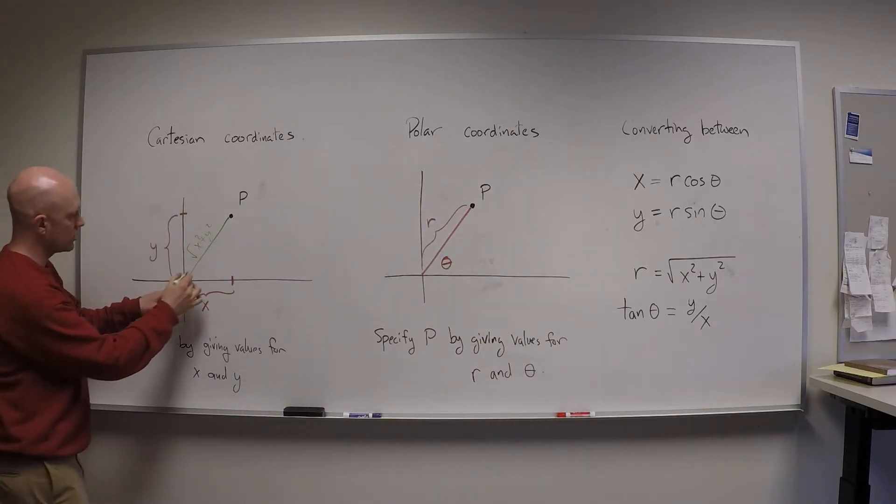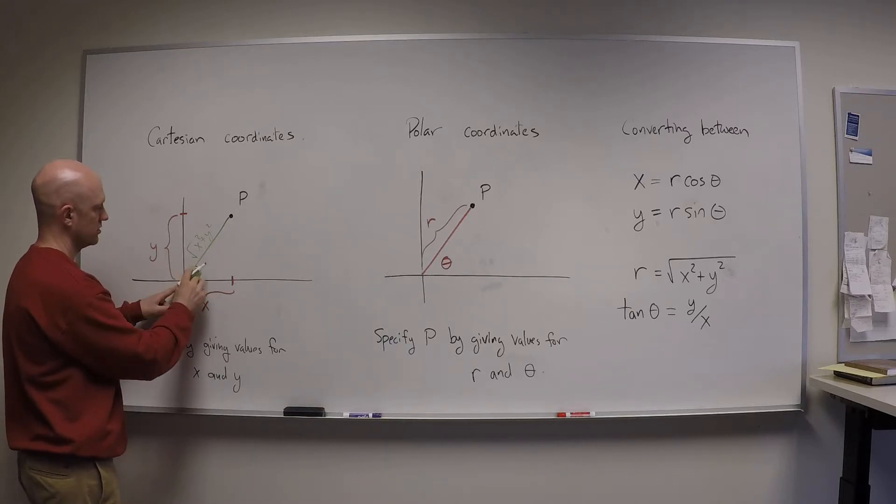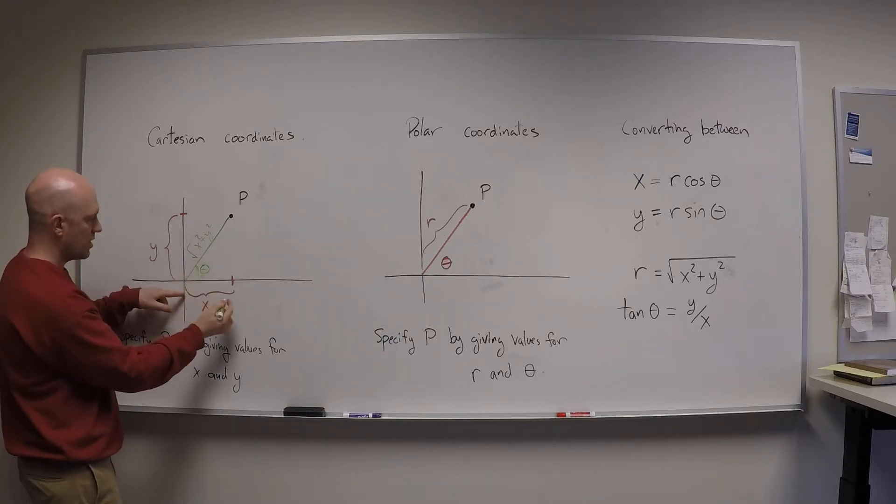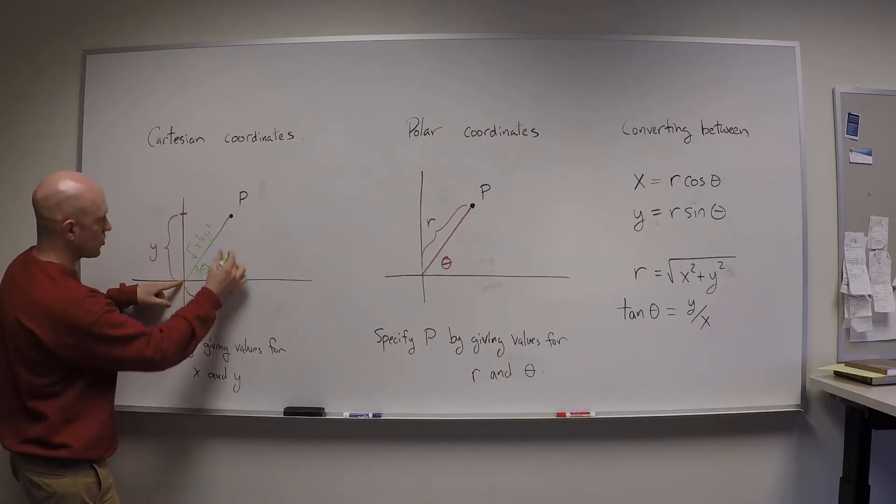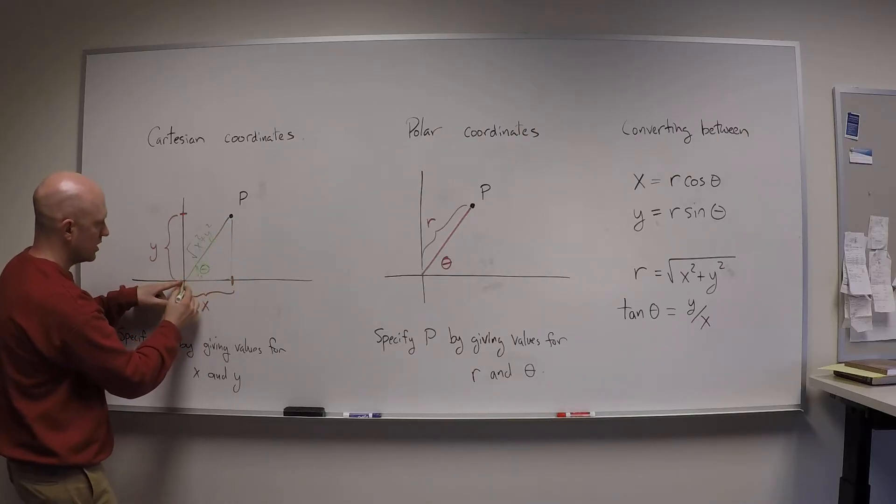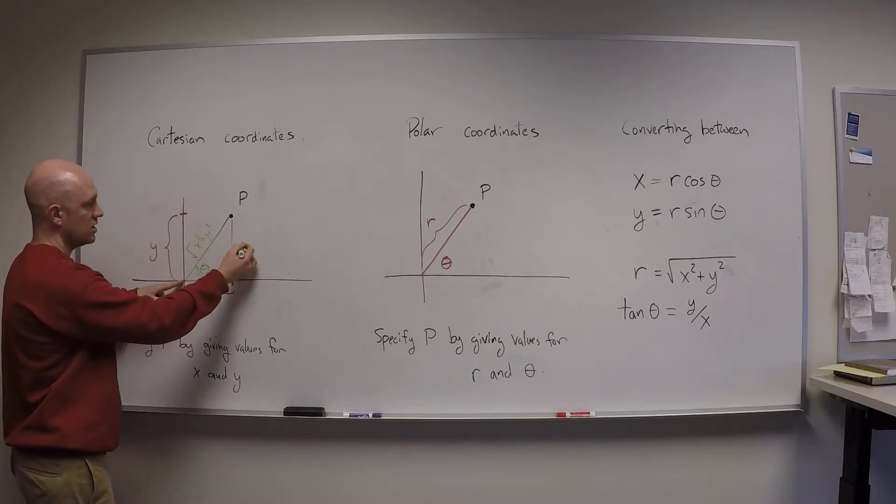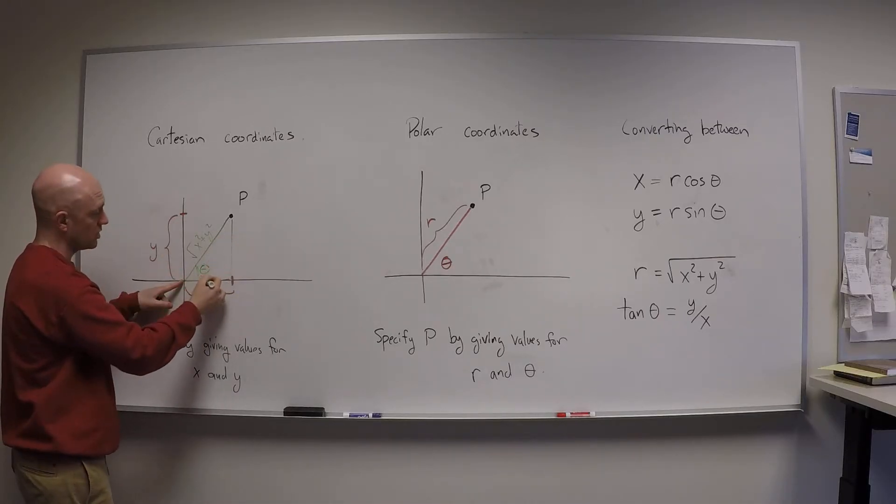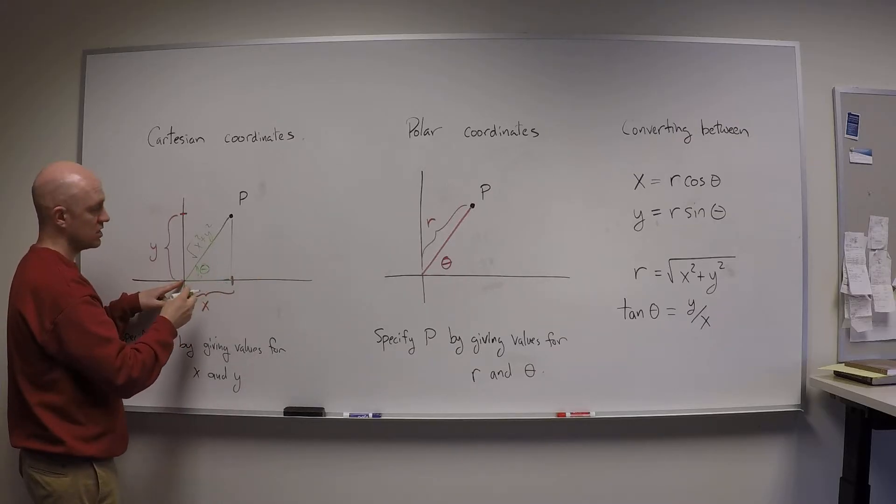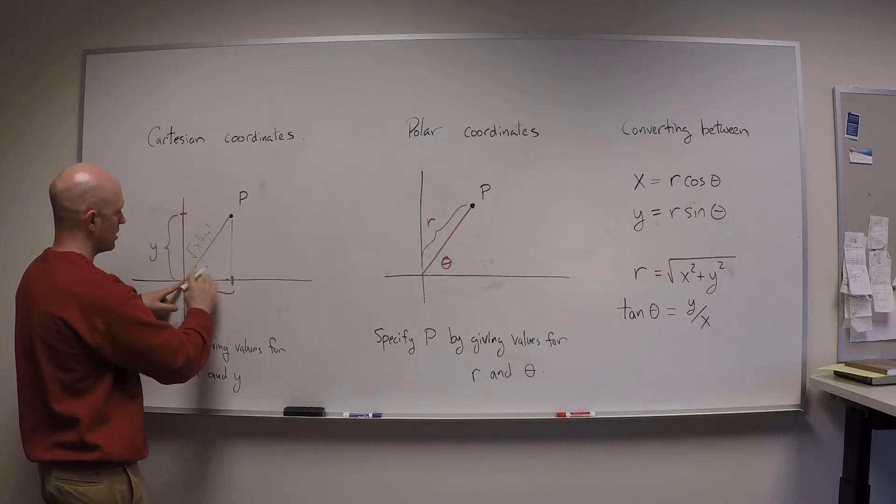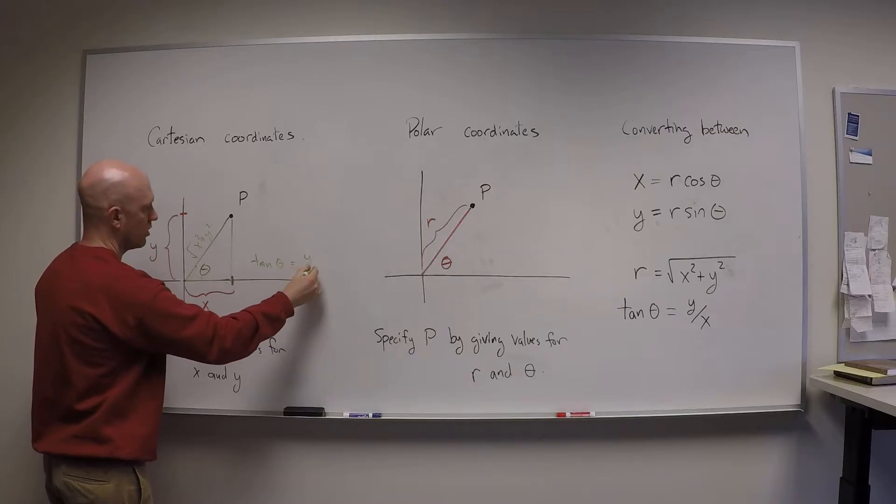On the other hand if I know this theta right here, I know that if I make a triangle like that then x can be the adjacent, y can be the opposite, and the opposite over the adjacent is going to be the tangent of theta which is the same as y over x. So tan theta here equals y over x.